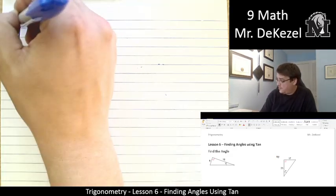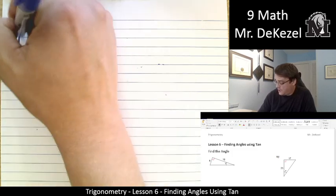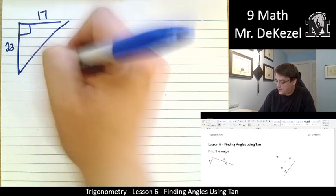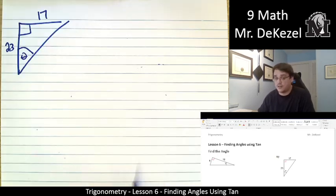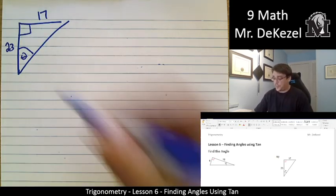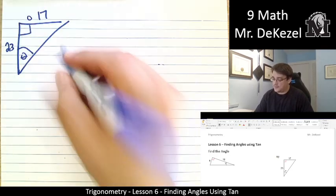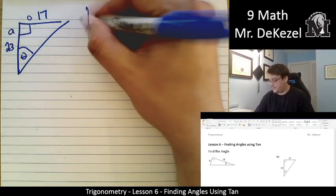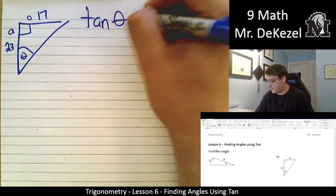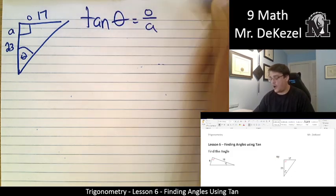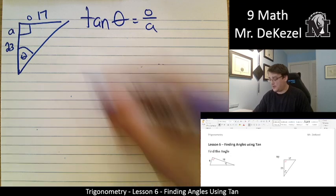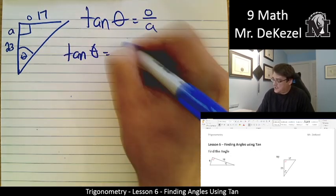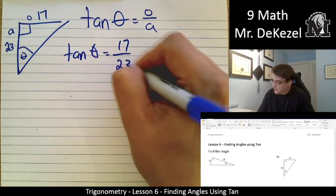Alright, so we have a triangle with a right angle, 17 for this side, 23 for this side, and an angle of interest of this bottom one. So, from the angle of interest, this is the opposite side, and this is the adjacent side. We're going to use tan. Opposite over adjacent. Let's plug in what we know. Opposite is 17, adjacent is 23.